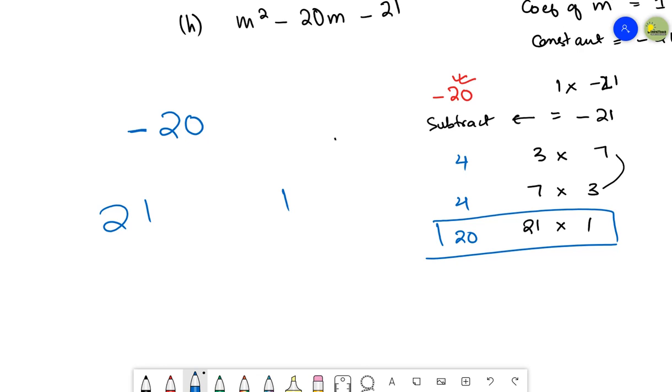For -20, I mentioned this before: if your middle term has a minus sign, that sign will go with the larger factor. The sign that is with your middle term will go with the larger factor. If it's minus with the middle term, then minus goes with the larger factor. If it's plus with the middle term, then plus goes with the larger factor and minus goes with the other one.